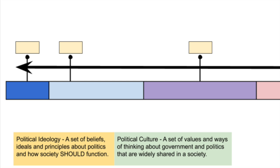Those ideologies then proceed to build our political culture. Political culture is a set of values and ways of thinking about government and politics that are widely shared in a society. For example, back in the 1950s, prior to the massive civil rights movement, political culture said that black people and white people should be separated — hence how we received segregation. After the 1950s, 60s, 70s, and to a greater degree even now, we are beginning to see that people of all colors should be welcome in all places. That would be a change in our political culture.